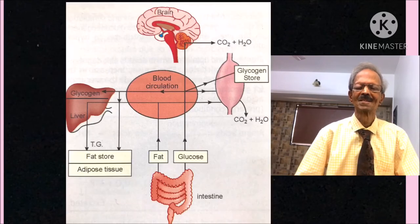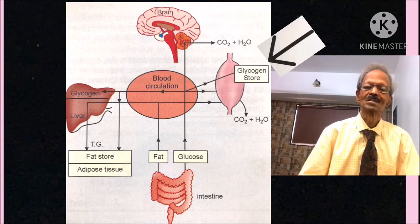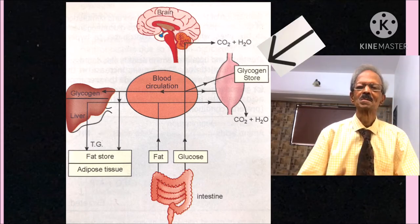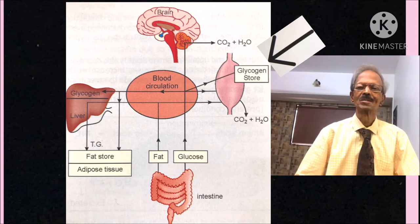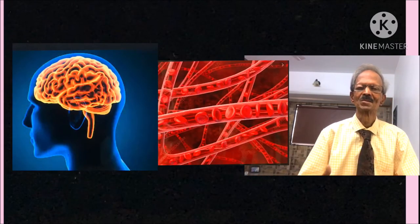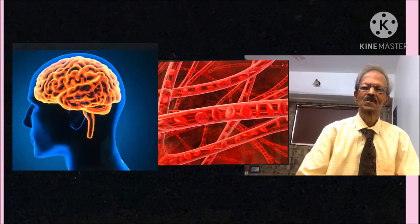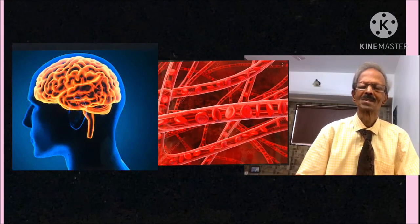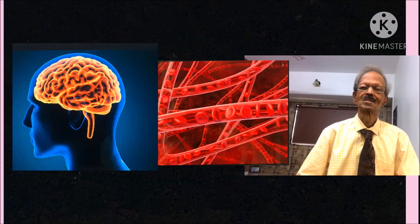Similarly, excess glucose molecules are converted into glycogen. During the fasting stage, these stored glucose molecules in glycogen are released to provide energy mainly to red blood cells and brain, and also to other cells. Remember, brain and red cells are completely dependent on a continuous supply of glucose for their respective functions.